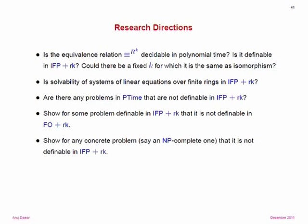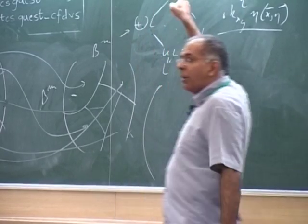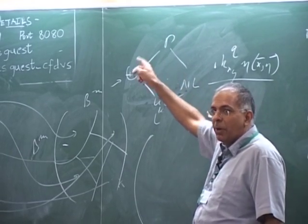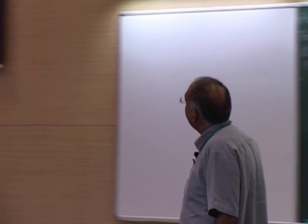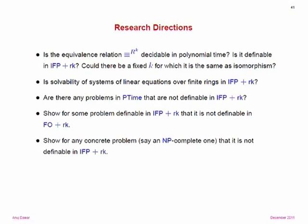Could it be that there is some fixed value of k for which RK gives you isomorphism? Is it actually an infinite sequence of ever-refining relations, or could there be a fixed k? I would be surprised, but I don't know the answer. Can we solve linear equations over finite rings in fixed-point with rank? It's more general than solving over fields and we don't know whether it reduces to that. Are there any problems in P-time non-definable in fixed-point with rank? How about separating fixed-point with rank from first-order with rank? Prove that you can't do alternating transitive closure in first-order with rank — prove directed reachability is not in first-order with rank on unordered structures.